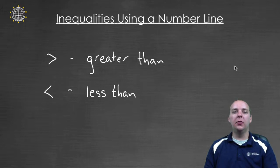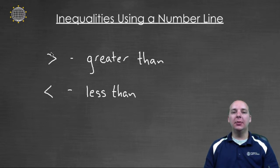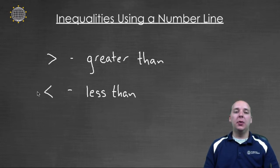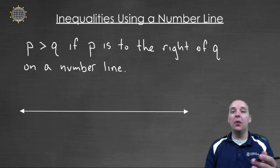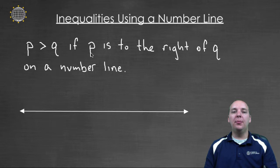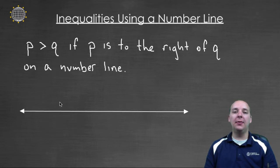One thing that a real number line is very useful for is talking about when one number is greater than or less than another number. These are what are known as inequalities. We use the greater than symbol to indicate one number is greater than another, and when it's reversed, that symbol indicates one number is less than another. P is greater than Q if P is to the right of Q on a number line — larger numbers are on the right, smaller on the left.